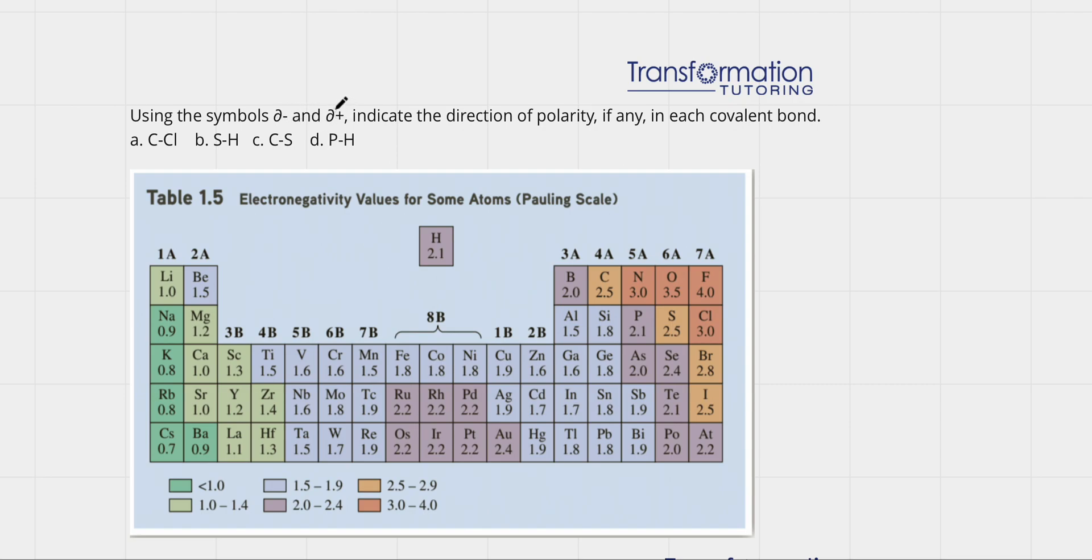So let's go ahead and check C and Cl. I have carbon here which is 2.5, and I have Cl here which is 3. Who is more electronegative, carbon or chlorine? Chlorine is more electronegative, so it's going to pull the electrons stronger to itself, so it will have a partially negative charge and carbon must have a partially positive charge.